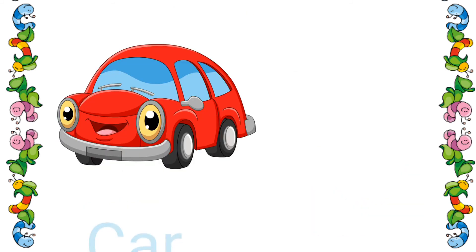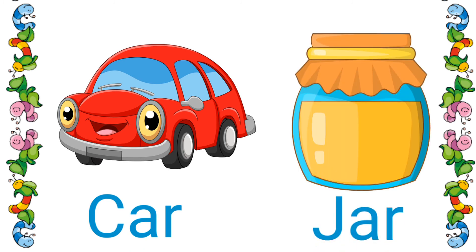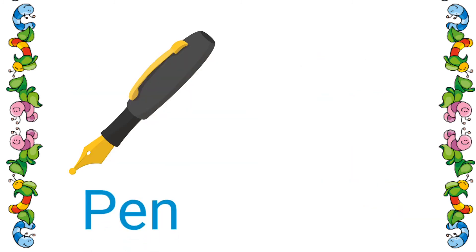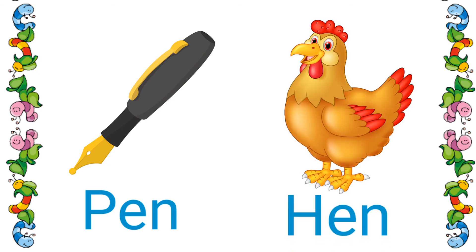Then car. Then the next picture is jar. Car. Jar. Then next one. Pen. Then look at the next picture. Hen. Pen. Hen.